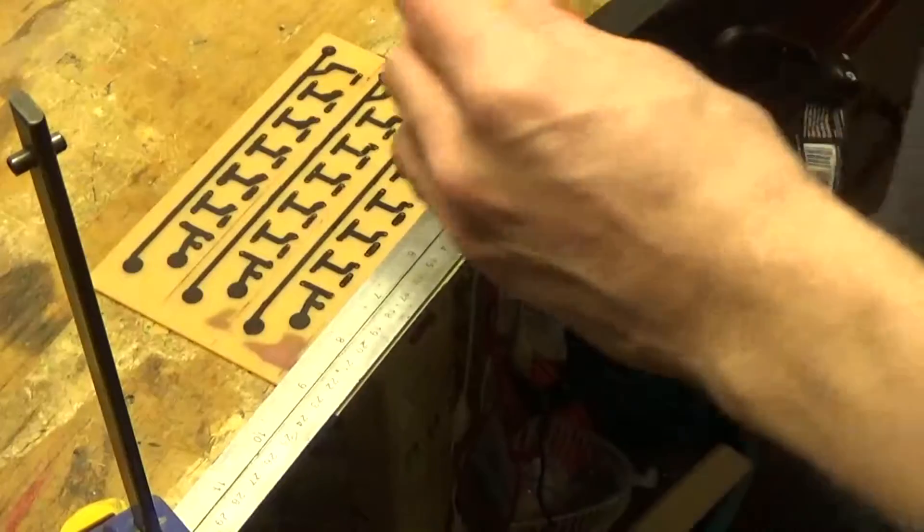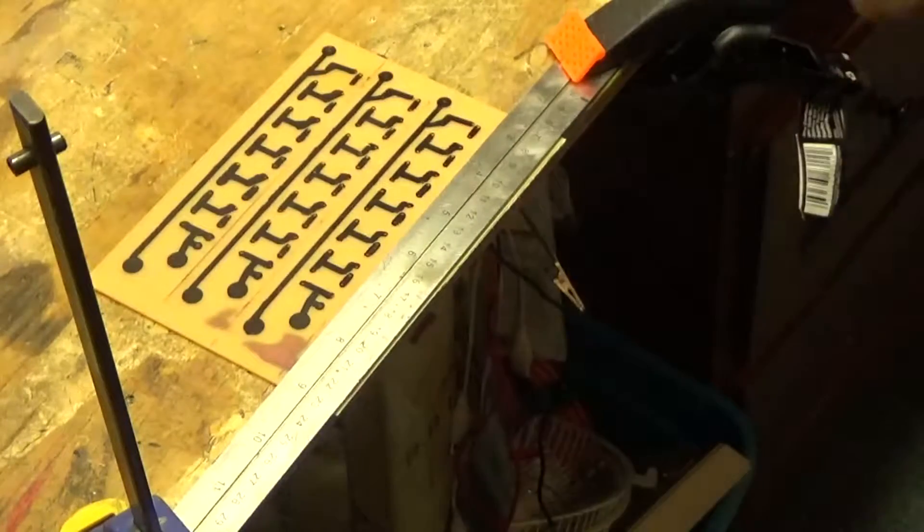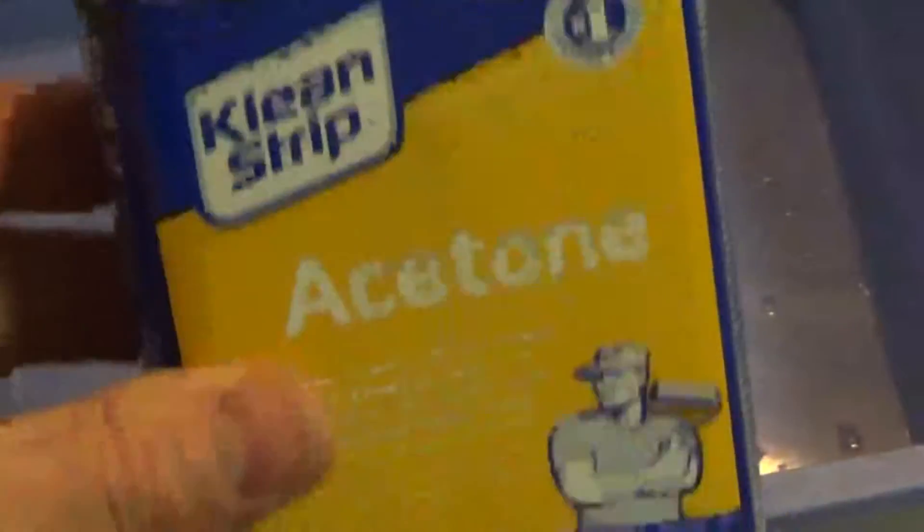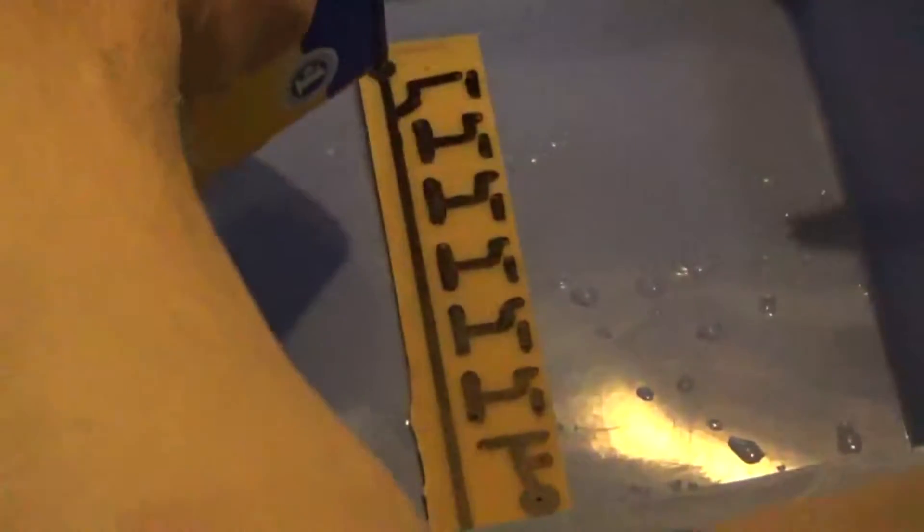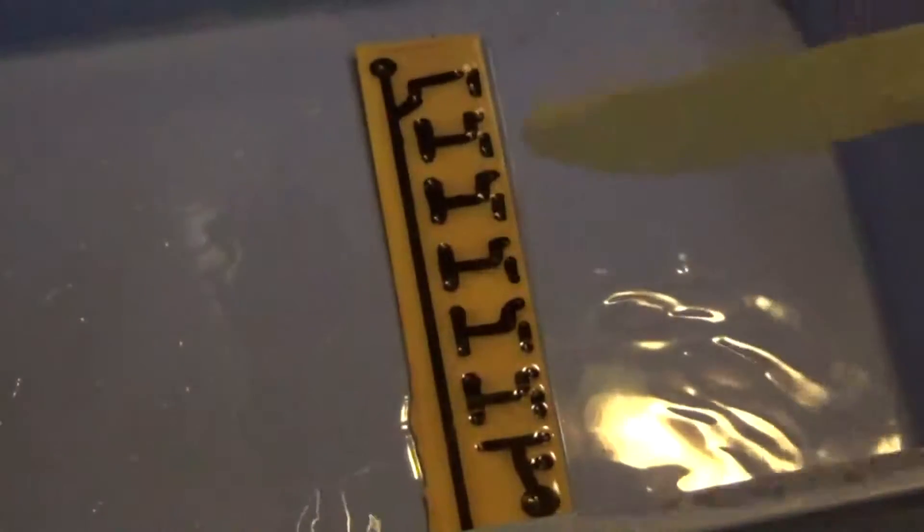Now to my favorite part, taking the ink off with acetone. Take some acetone or fingernail polish. Now this stuff's going to evaporate fast, so you just need a little bit on here. I'm going to just try to pour a little bit on here and close it up as fast as you can. Should wear gloves.